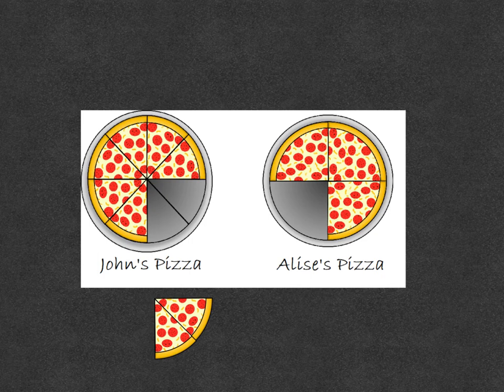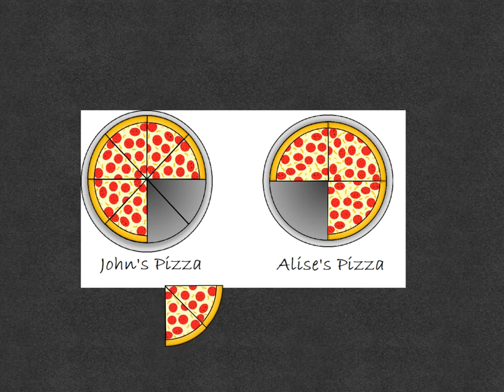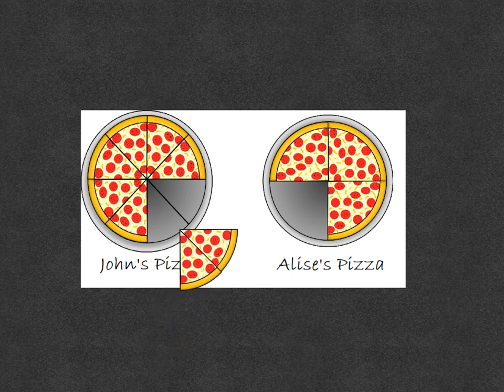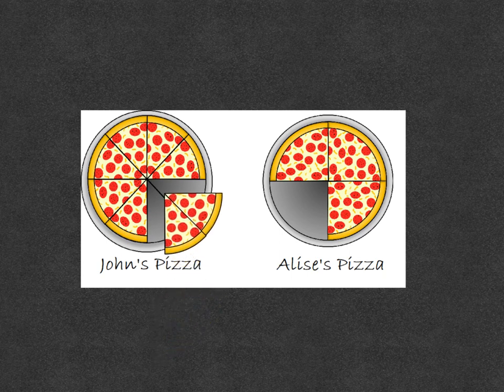Let's talk about why John and Elise tied on their pizza eating contest. Here are the two pieces of pizza that John ate. We say he ate two out of eight pieces of pizza, or two eighths.